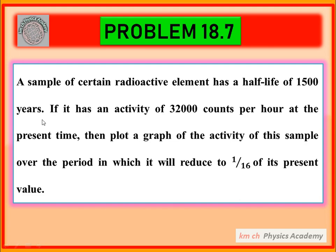Our radioactive element has a half-life of 1500 years. If it has an activity of 32,000 counts per hour at the present time, we have to plot a graph of the activity of this sample over the period in which it will reduce to 1 over 16 of its present value of 32,000 counts per hour.